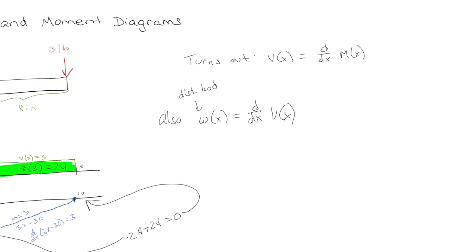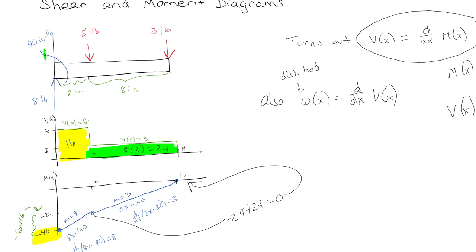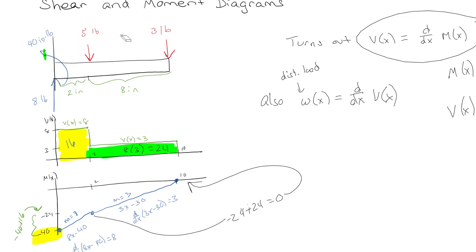The key relationships to write down: the moment is the integral of the shear, and generally the shear is the integral of the distributed load. Concentrated loads are what give you discontinuities in the graph. If we had a triangular distribution we'd see a linear shear rather than these sharp jumps. The sharp points come from point loads — just bam, 5 pounds, bam, 3 pounds out of nowhere.